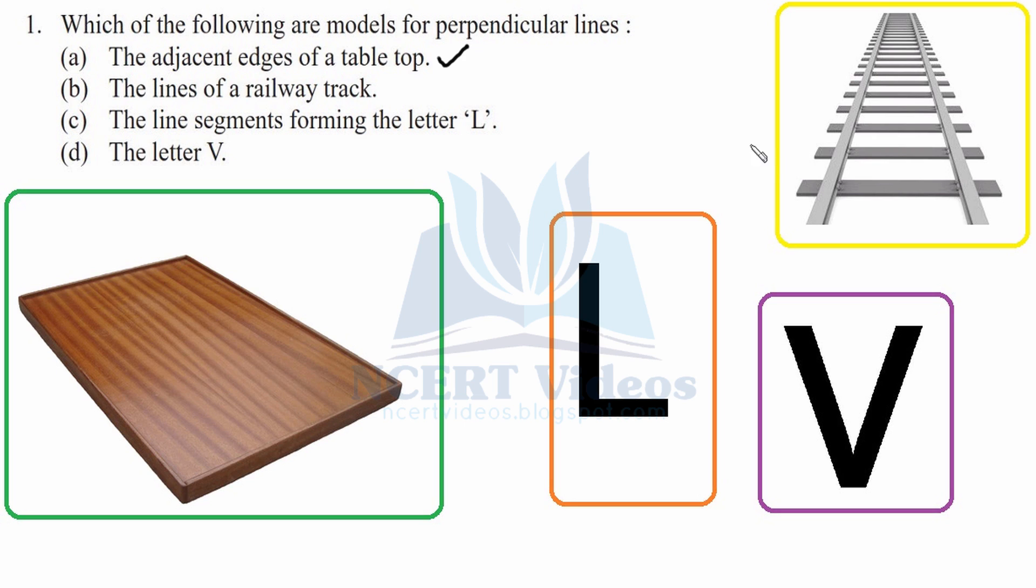The lines of a railway track - if you measure the distance between two straight edges of a railway track, they will be the same throughout. Therefore they make parallel tracks and are not perpendicular lines.